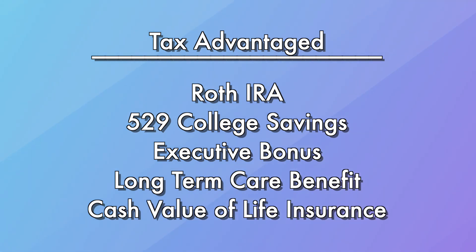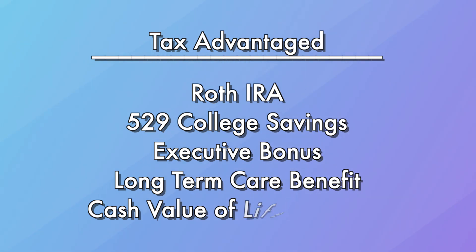So why does it make sense to save all of our money for retirement in an account where we don't even know where taxes are going to be when we want to take the money out? When thinking about retirement and taxes, it's important to think about not only having a TaxLater account, but also diversifying your portfolio and having a TaxAdvantage account. TaxAdvantage is tax-free. These accounts include Roth IRAs, 529 college savings, executive bonuses, long-term care benefits, and the cash value of life insurance. This is where the majority of the rich and the wealthy are saving their money to avoid taxes legally.